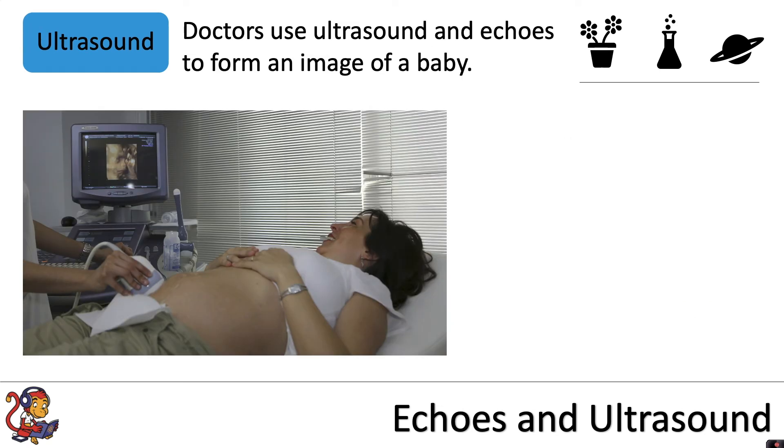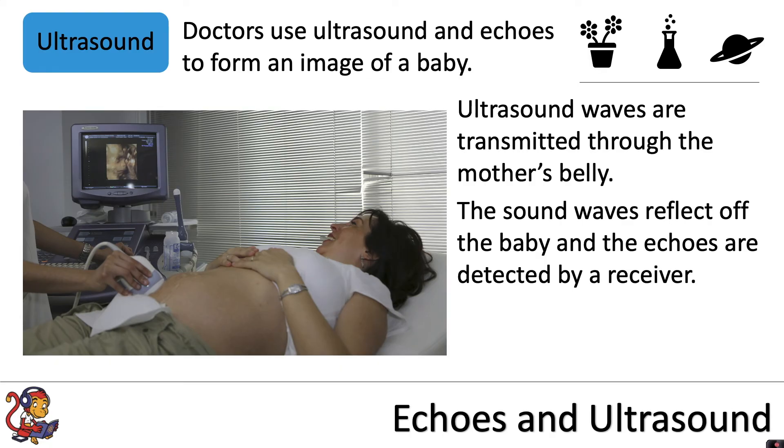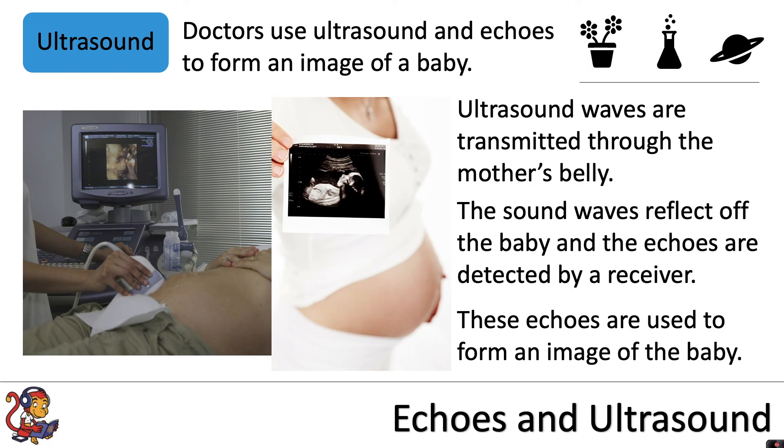Another use of ultrasound and echoes is when doctors use ultrasound and echoes to form an image of a baby. Ultrasound waves are transmitted through the mother's belly, the sound waves reflect off the baby, and the echoes are detected by a receiver and used to form an image of the baby.